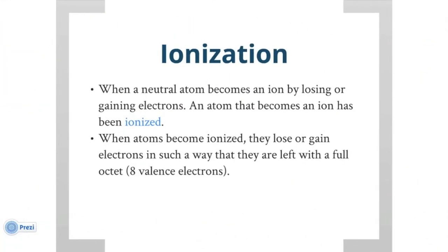Ionization is when a neutral atom becomes an ion by losing or gaining electrons. An atom that becomes an ion has been ionized. When atoms become ionized, they lose or gain electrons in such a way that they are left with a full octet.